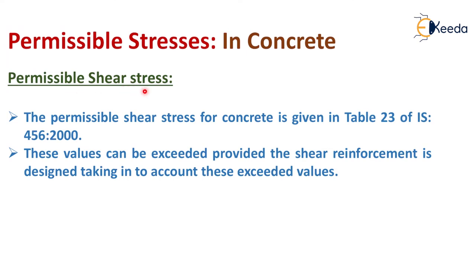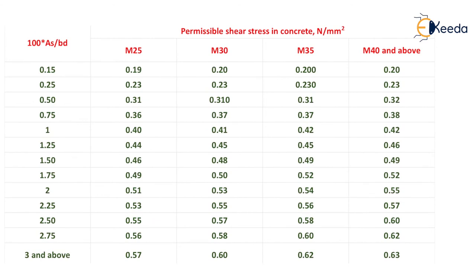Permissible shear stress: the permissible shear stress for concrete is given in table 23 of IS 456. These values can be exceeded provided the shear reinforcement is designed taking into account these exceeded values. This is the table used for permissible shear stress in concrete. It depends on the grade of concrete and the percentage of steel.